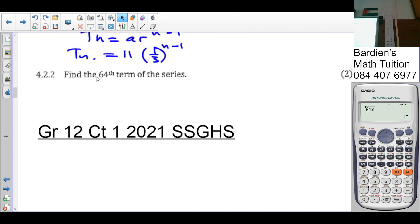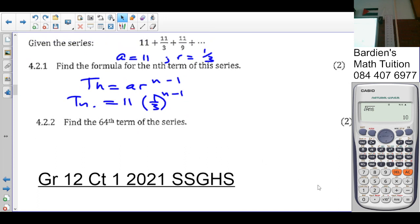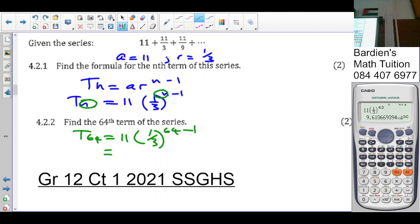Let's go to the next question. It says, find the 64th term of the series. 64th term, so T64. We plug in N up to 64. So it's going to be 11 into 1 over 3 raised to 64 minus 1. Put that in our calculator. So it's 11 into 1 over 3 raised to the exponent 63. So you can write it as 9.61 times 10 to the minus 30, or you just write it as 11 into 1 over 3 raised to the exponent 63. That's it.